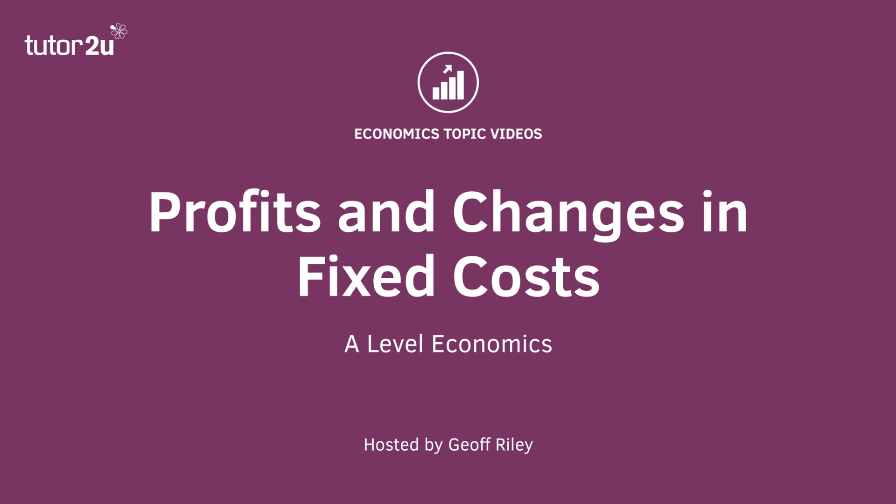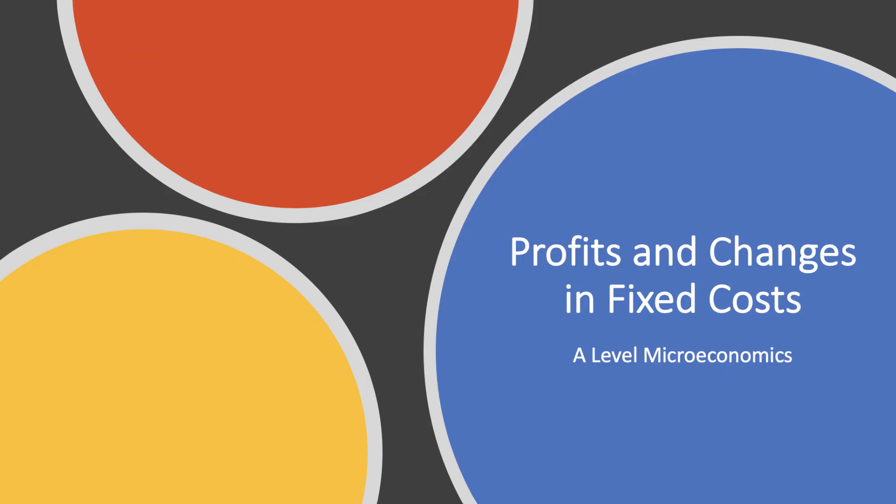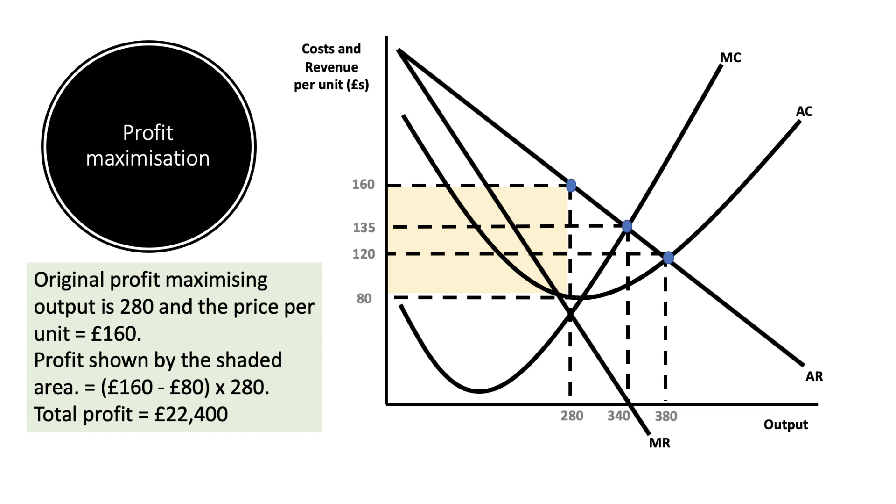Hi there, welcome to another micro video. This time looking at a worked example, a numerical example of how a change in a firm's fixed cost of production can affect their profitability. Here's our initial situation: downward sloping demand curve for a firm operating in the short run.